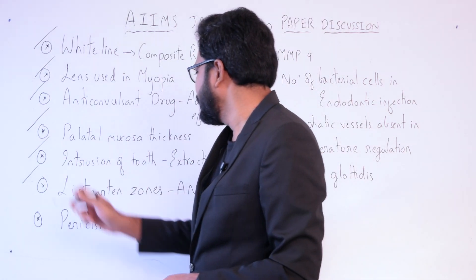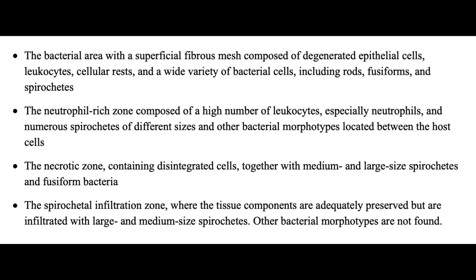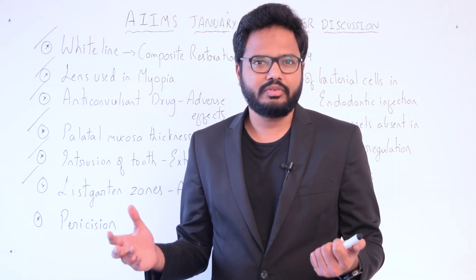Listgarten's zones in acute necrotizing ulcerative gingivitis (ANUG), described in 1965: four layers from most superficial to deepest. First, the bacterial zone with a superficial fibrous mesh of degenerated epithelial cells and leukocytes. Second, a neutrophil-rich zone. Third, a necrotic zone. Fourth, the spirochetal infiltration zone.